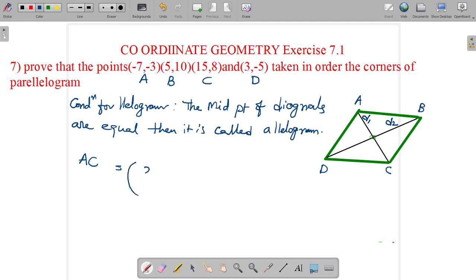The midpoint formula is (x₁+x₂)/2, (y₁+y₂)/2. First write the A coordinates (-7,-3), C coordinates are (15,8).